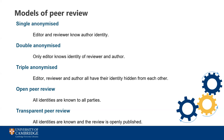Triple anonymized review means the editor, author and reviewer all have their identity hidden from the others. An editorial office takes responsibility for facilitating the review process. This aims to ensure that the editor with the decision-making power is not influenced by any of their own biases, but in practice it's quite complex to administer, and it may still be possible to identify people from their work.